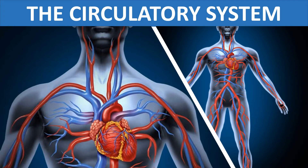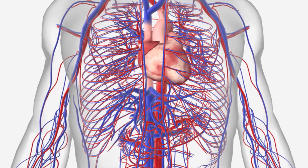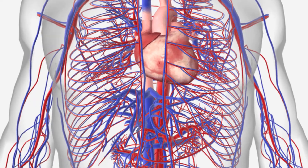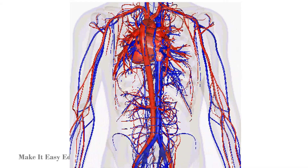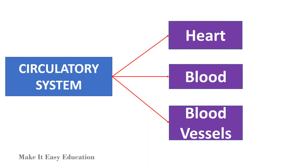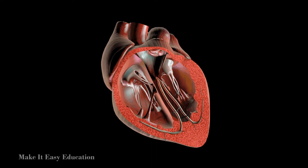The circulatory system is an organ system that helps in transporting nutrients, water, and oxygen inside our body. It also helps to remove waste gases such as carbon dioxide from the body. The circulatory system is made up of three main parts: heart, blood, and blood vessels.